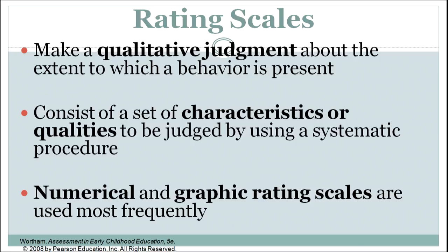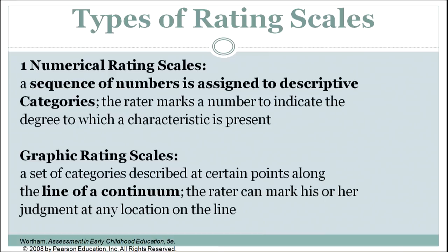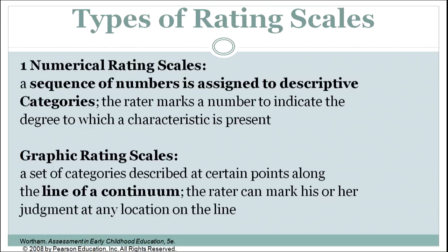Generally we use two types of rating scales: numerical and graphic rating scales. In numerical rating scales, a sequence of numbers is assigned to descriptive categories, and the rater marks a number to indicate the degree to which a characteristic is present. For instance, for punctuality: 1 means always punctual, 2 means punctual most of the time, and 3 means seldom or never present. In graphic rating scales, categories are described at certain points along a continuum line, and the rater marks their judgment at any location on that line.